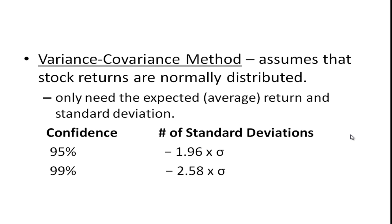The second method is known as the variance covariance method. And this assumes that stock returns are normally distributed. In this case we only need the expected or average return and the standard deviation. And if we know those then we can go to the statistical tables and we can look at the probabilities under the normal distribution curve. And for 95 percent confidence the critical value for one tail is minus 1.96 and we multiply it by the standard deviation. That's going to give us our VAR. For 99 percent it's minus 2.58 and again we'll multiply it by the standard deviation.